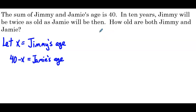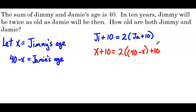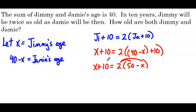In 10 years, Jimmy's age is x plus 10. That equals twice Jamie's age at that time, which is 2 times 40 minus x plus 10. Simplifying the parentheses: x plus 10 equals 2 times 50 minus x. Distributing the 2 gives x plus 10 equals 100 minus 2x.